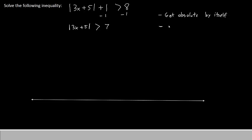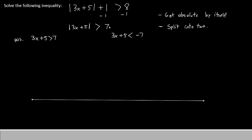Just like the absolute value equations, our next step will be to split this inequality into two. Just like the equations, we'll have 3x plus 5 greater than 7 as our positive version. Then we'll have a negative version where we change the sign of the number on the right and change the inequality sign as well. So our second inequality will be 3x plus 5 less than negative 7.